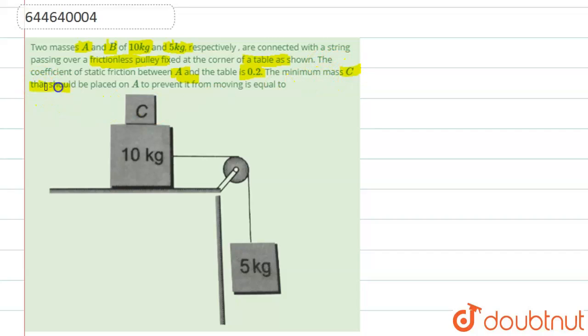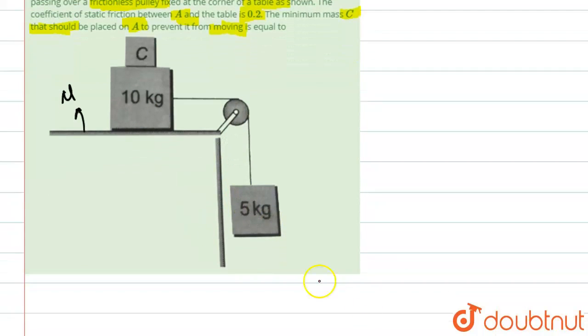Minimum mass C that should be placed on A to prevent it from moving is equal to what? So firstly, let's see what is basically here. There is static friction μ, and this is the case of the pulley. If we draw the free body diagram of this, the forces on 5 kilograms is basically mg, which is equal to 5 into 10, which is equal to 50 Newton.